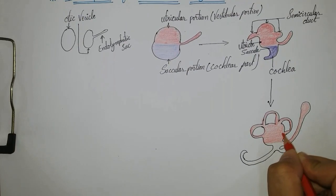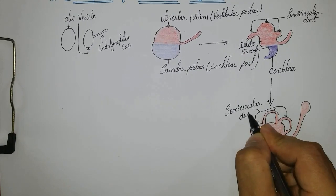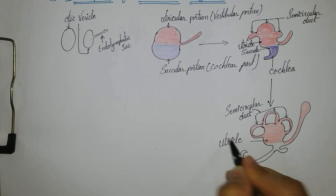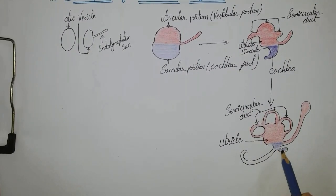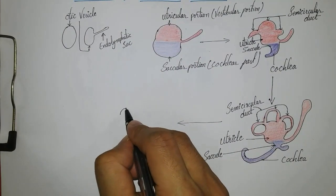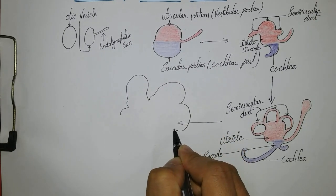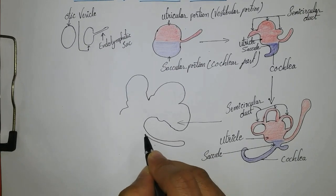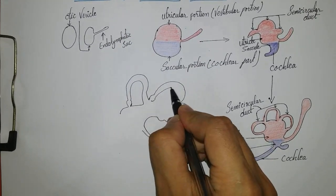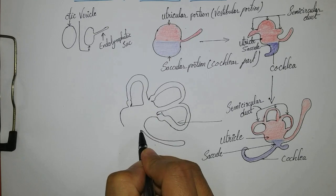The utricular portion of the otic vesicle gives rise to the utricle, semicircular ducts, endolymphatic duct and sac, and the vestibular ganglia of the vestibulocochlear nerve. We will label the semicircular duct and utricle in red, and in blue color we will label the saccule and the cochlea.